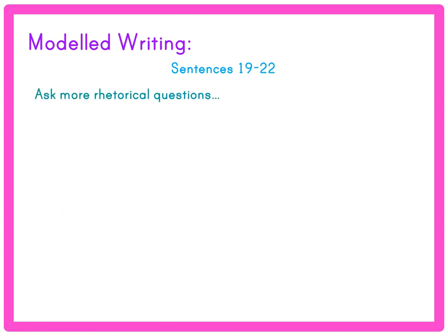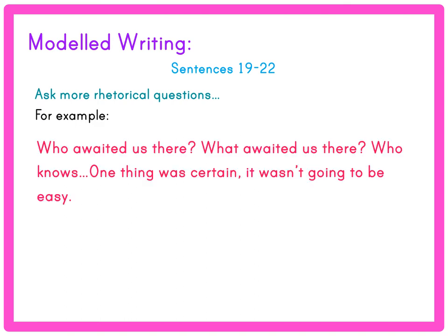Sentences 19 to 22: Ask more rhetorical questions. For example: 'Who awaited us there? What awaited us there? Who knows? One thing was certain — it wasn't going to be easy.'